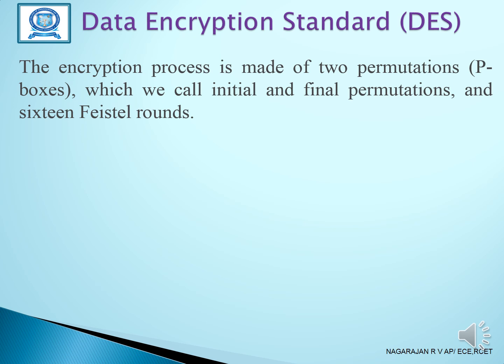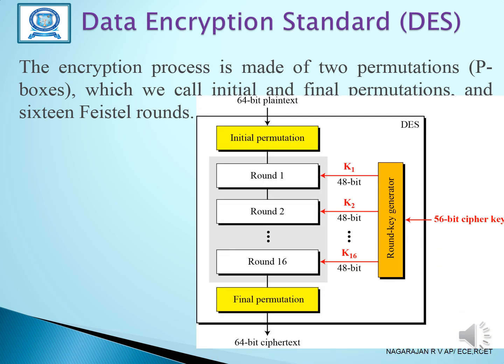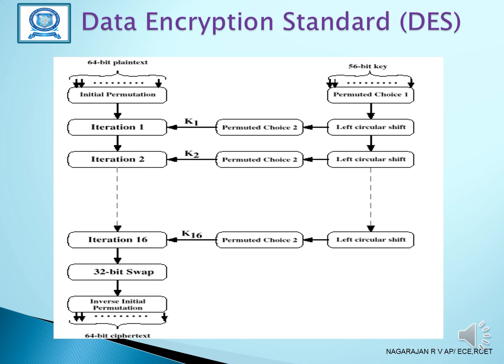The encryption process in the DES algorithm is made up of two permutation P-boxes — called initial and final permutations — and 16 Feistel rounds. The 64-bit plain text undergoes initial permutation, followed by 16 rounds, and a 48-bit subkey is generated from the 56-bit cipher key.